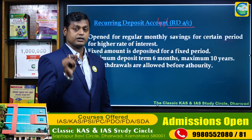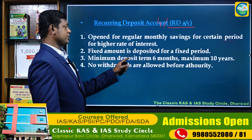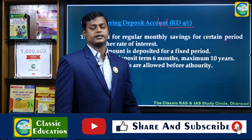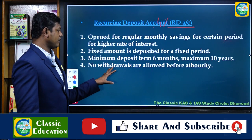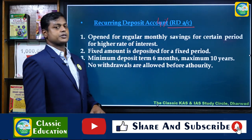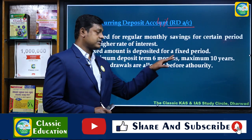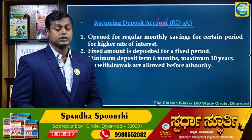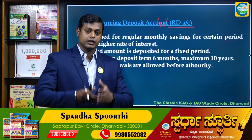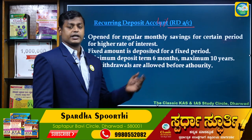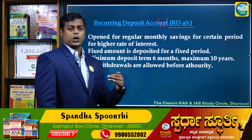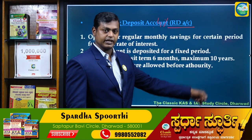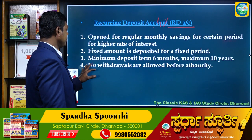Point number three: the minimum deposit term is six months and the maximum is 10 years. For example, if you open a recurring deposit account, the minimum period is six months and the maximum is 10 years. You deposit a fixed amount every month, and at the end of the term, the total amount along with calculated interest is given to you. You can choose one year, two years, five years, or up to 10 years.